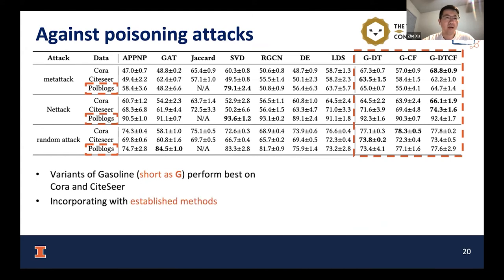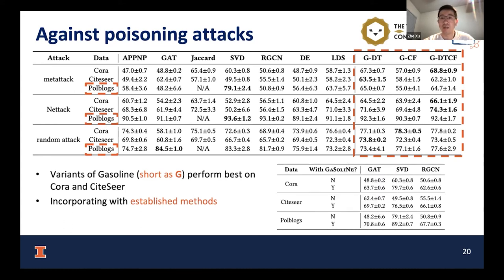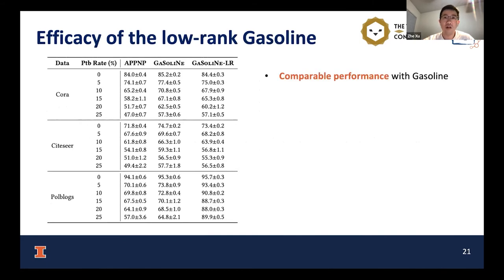We can incorporate our method with established defense methods such as GAT, SVD, and Robust GCN, and find that their performance is further boosted significantly. We present more experimental results in our paper. Regarding the low-rank version of GASOLINE, it achieves comparable performance to the full version while also getting strong performance on the Cora-ML dataset, consistent with our observation that SVD achieves strong performance there. In terms of efficiency, the low-rank version is much more efficient than the full version, consistent with our theoretical analysis.